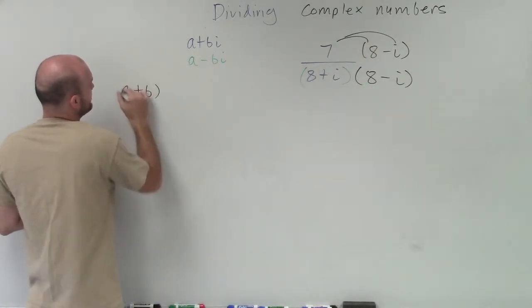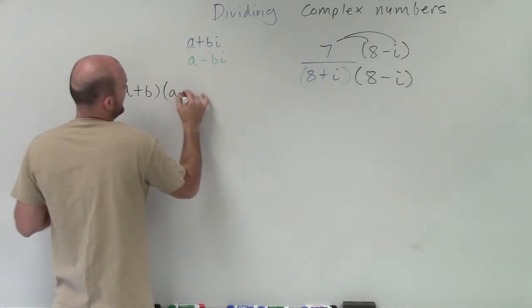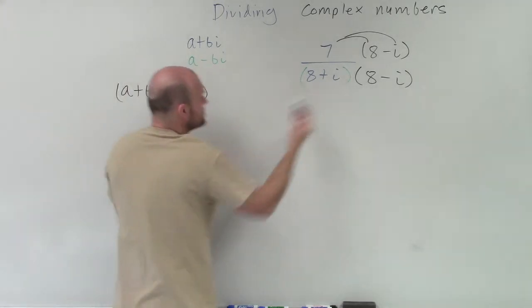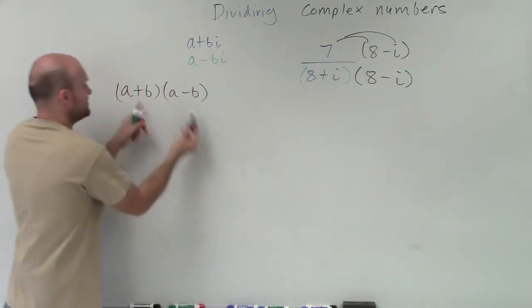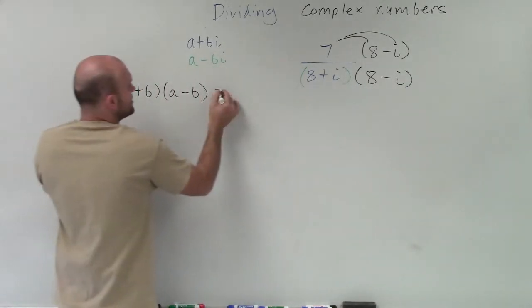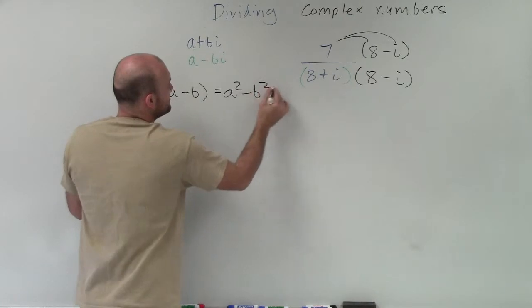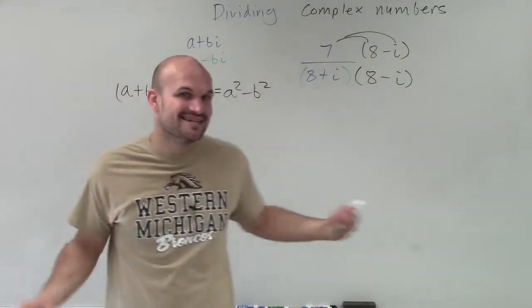a plus b times a minus b is the difference of two squares. These two terms are the same. These two terms are the same. The only difference is the signs. So that becomes a squared minus b squared. So multiplying by the conjugate is not so bad.